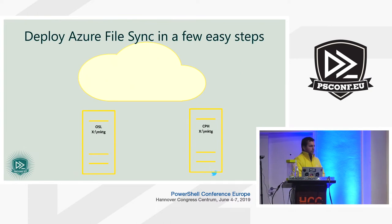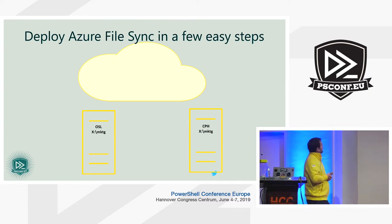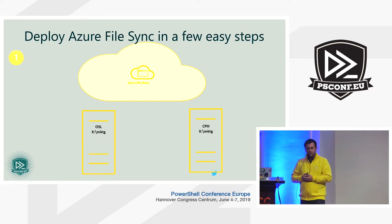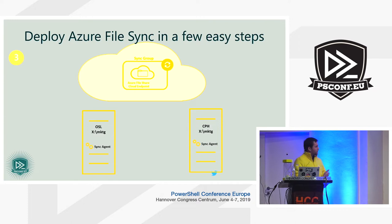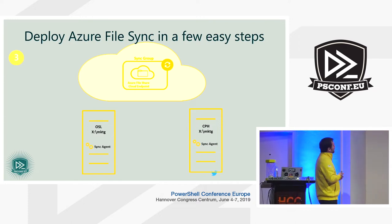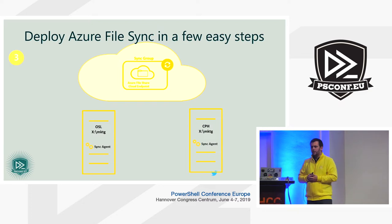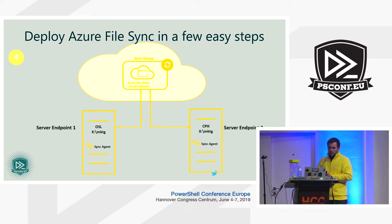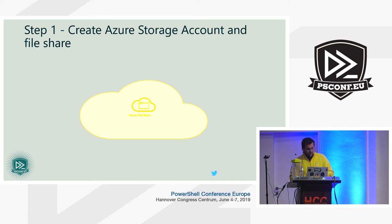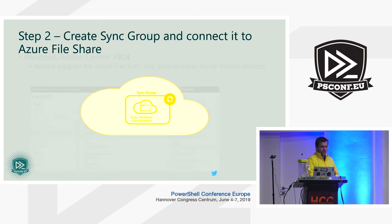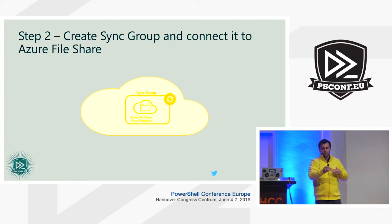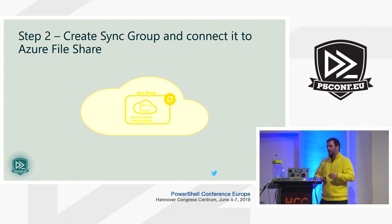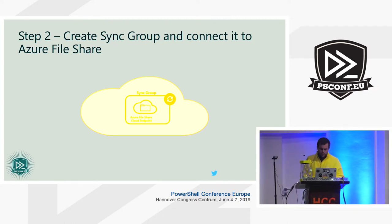For deployment, you first set up an Azure file share in a storage account in Azure, then deploy the sync agent to one or more servers you want to synchronize against the cloud endpoint, and then create a sync group to map the storage account to the registered servers.